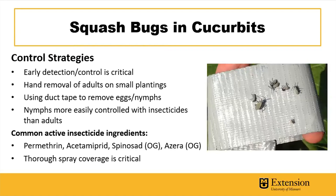Early detection and action is critical with these insects. On a small scale in the home garden, you can remove them by hand and dump them in a pail of soapy water. Duct tape is really good at getting those nymphs — they'll often be congregated in a group so you can get a bunch at one time. You can also use duct tape to remove eggs, or simply squash the eggs under your fingernail.